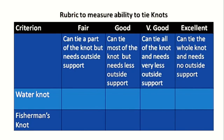Looking at the fisherman's knot: if the rating is fair, the child can tie a part of the knot but needs outside support. If good, the child can tie most of the knot but needs less outside support. If very good, the child can tie all of the knot and needs very little outside support. If excellent, the child can tie the whole knot and needs no outside support. The rubric maps a child's performance on the continuum.